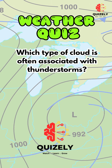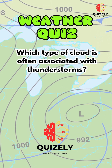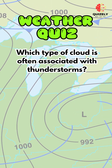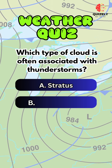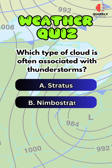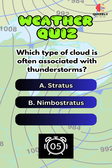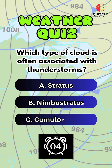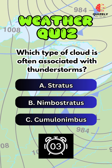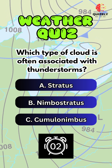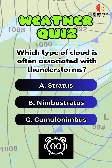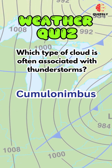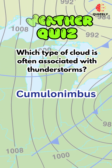Which type of cloud is often associated with thunderstorms? A. Stratus. B. Nimbostratus. C. Cumulonimbus. The right cloud type is cumulonimbus.